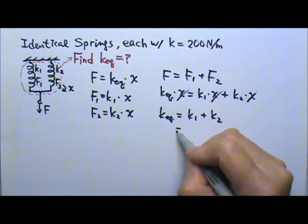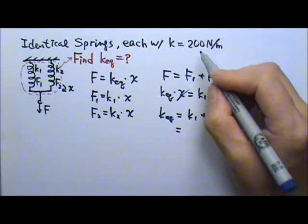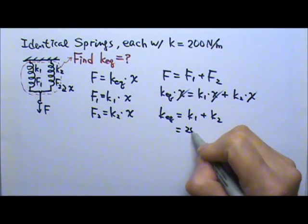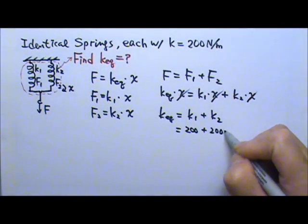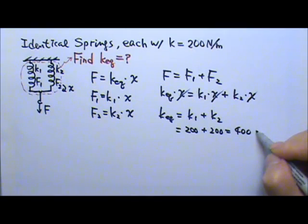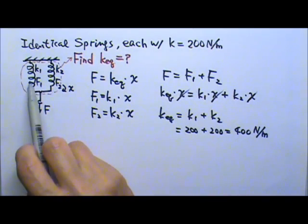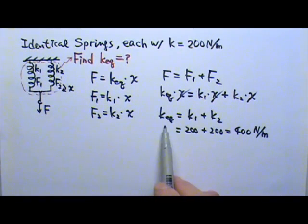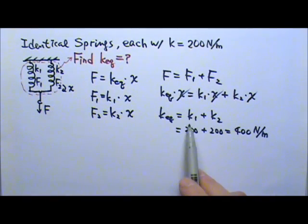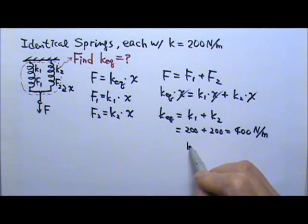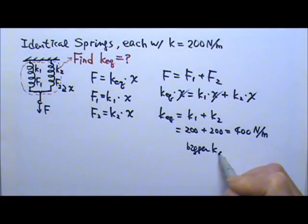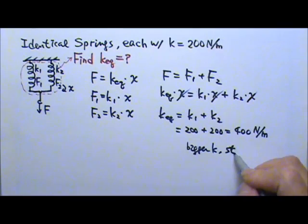So in this case, both K1 and K2 are 200, giving 200 plus 200 equals 400 newtons per meter. This tells us that when we connect springs in parallel, we end up with a larger spring constant. The equivalent K is bigger than K1 and bigger than K2, and a bigger K means it's a stiffer spring.